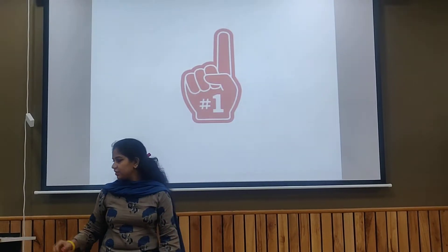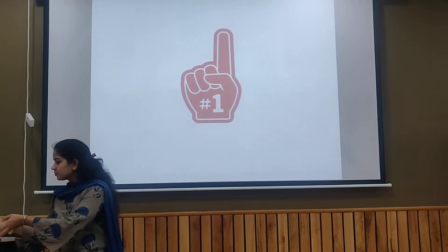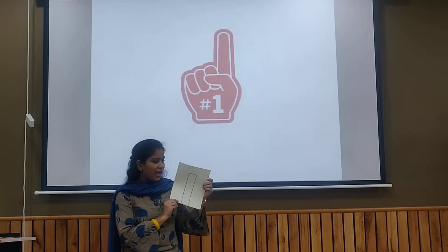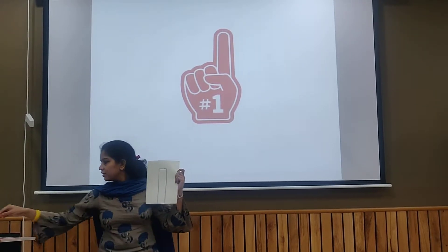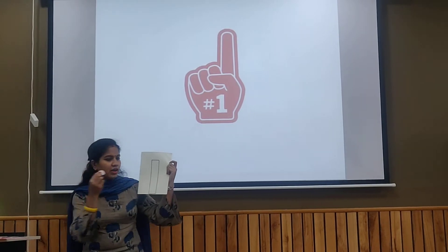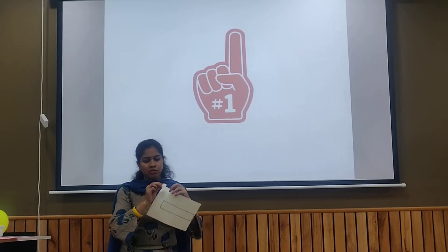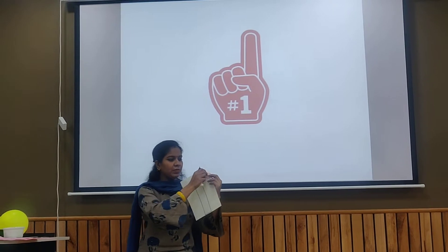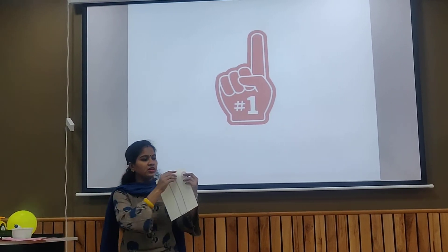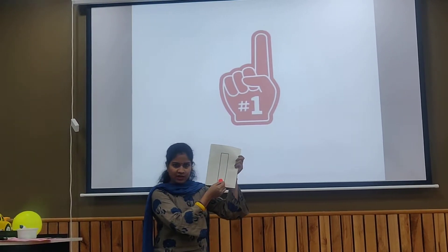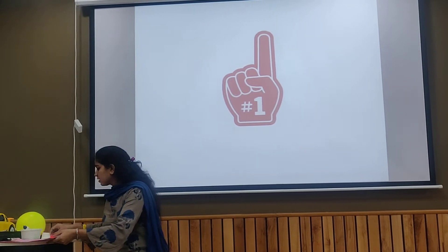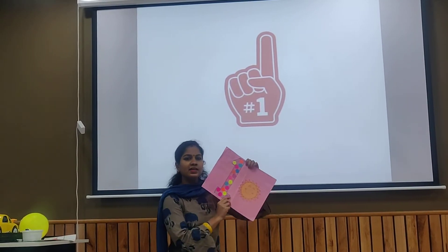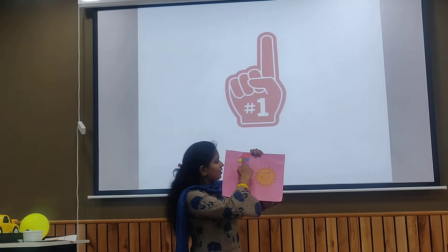Now we will do an activity. This is the cutout of number one and we can paste the circle on this cutout. We put some glue on it and paste on the cutout of number one. And this is number one.